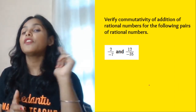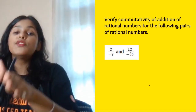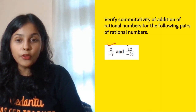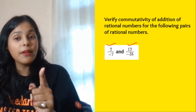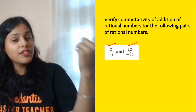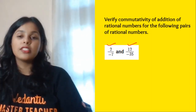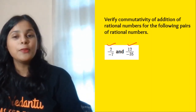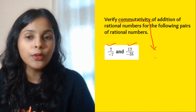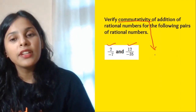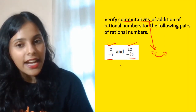The second question: verify commutativity of addition of rational numbers for the following pairs. Commutativity means you can change the order of the numbers — if you don't remember, watch the revision section on properties or the introduction to rational numbers. Briefly: in commutativity, you simply change the place of the two numbers and check if the result is the same.